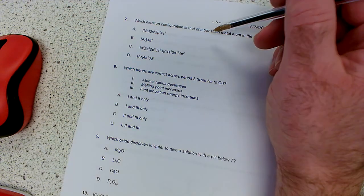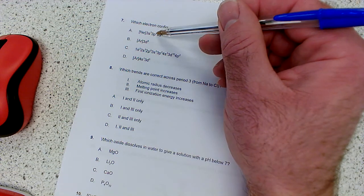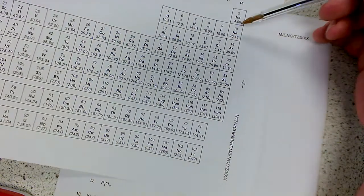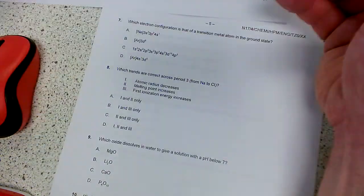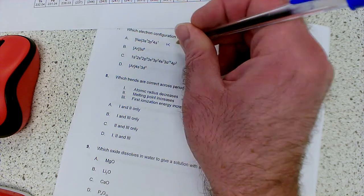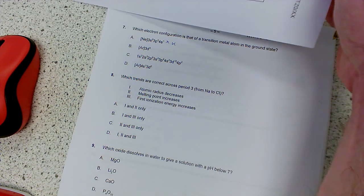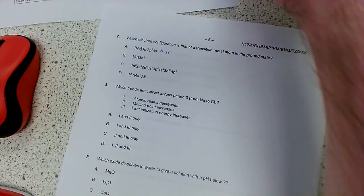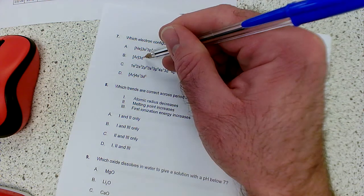Number 7, which electron configuration is that of a transition metal in the ground state? Well, what are they? This one here, that's Neon 3S2, 3P6, 4S1, so here's Neon, and then if you come along, there's 3S2, 3P6, 4S1. Well, it's not even a transition metal, it's potassium, basically. That's potassium, so it's not that one. 3D9, well, you need at least some, if it's in a ground state, and it's an atom, then we need at least some electrons in the 4S. There's no electrons in the 4S.